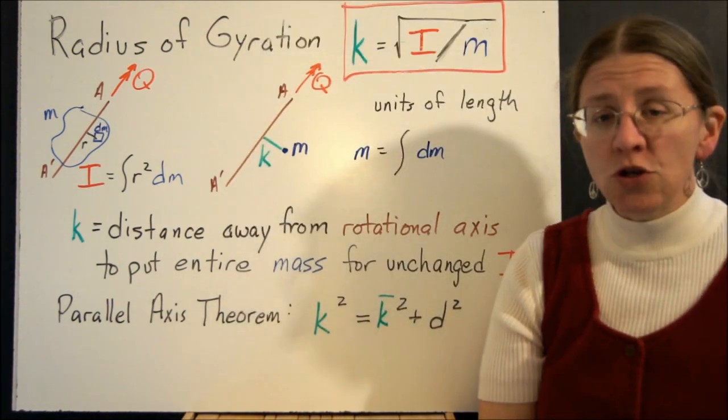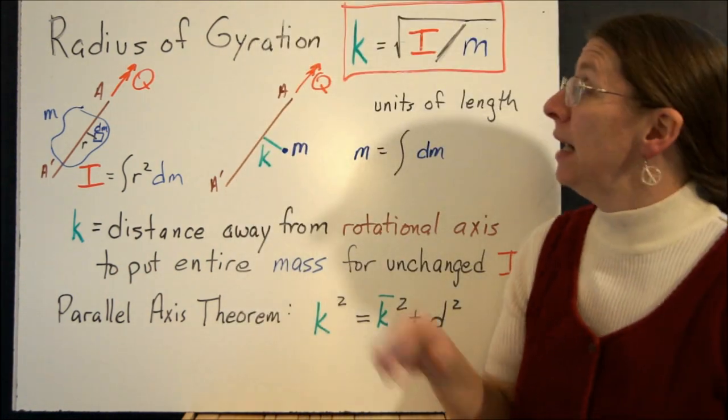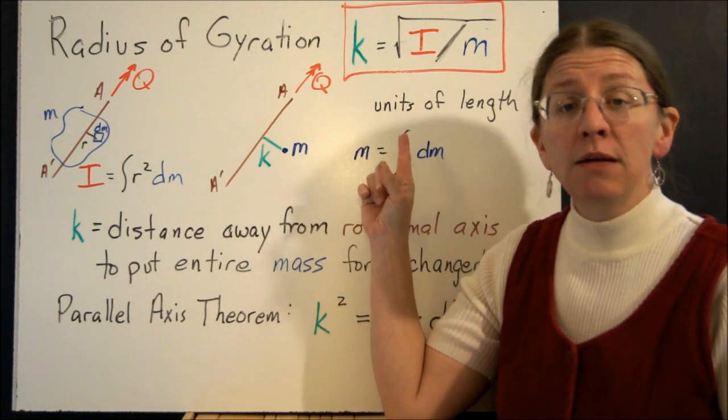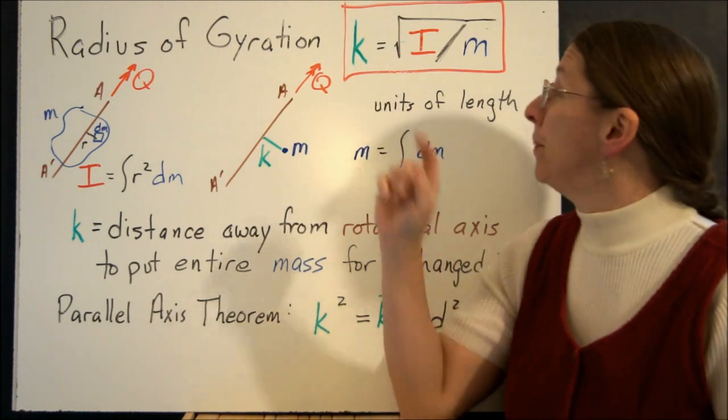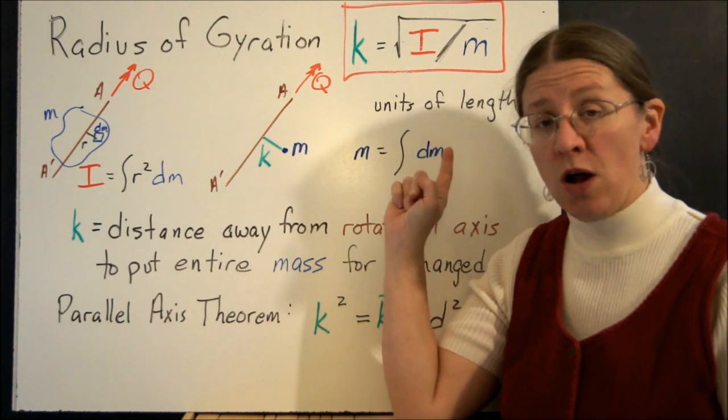And another thing that you should be aware of as a special case here is the radius of gyration. Like with the area, our radius of gyration is the square root of I over m, where m is the total mass of your object.